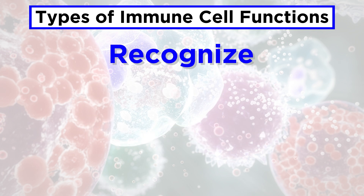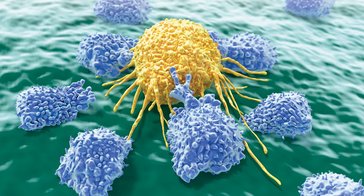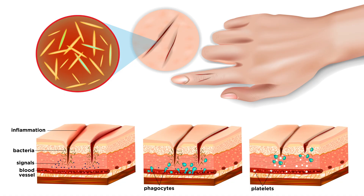Function one: recognize. An immune cell needs to be able to recognize when there is a threat. This involves being able to distinguish between self and non-self, meaning that it must differentiate between a cell of the human body and an infectious bacterium or virus. It also needs to recognize when self-cells become cancerous and need to be destroyed, or when there has been damage to self-tissue that needs to be healed, such as when you get a cut.